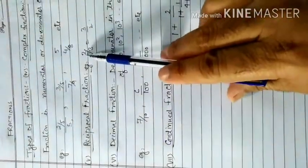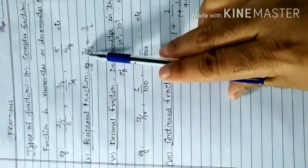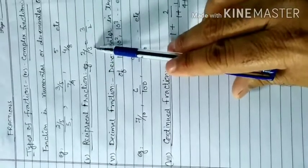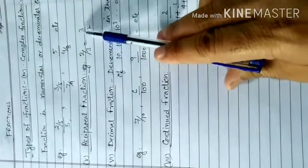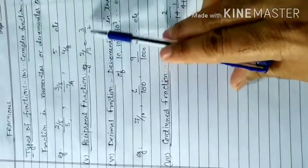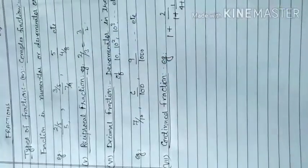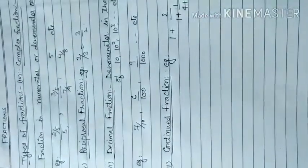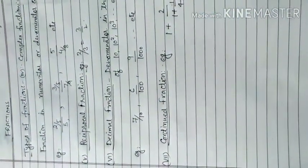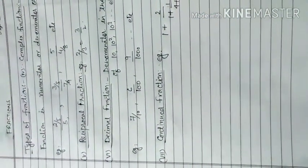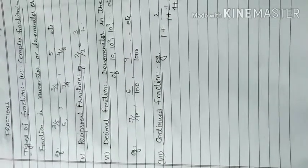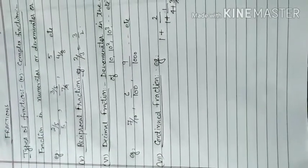For example, two upon three — you swap the numerator and denominator, so three becomes the numerator and two becomes the denominator. That will be a reciprocal fraction.